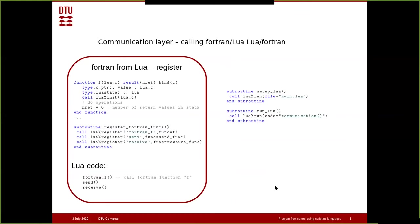Calling Fortran from Lua is straightforward: you basically just need to register a function. That function has to have a single interface — it must accept a C pointer which is your Lua handle, and it needs to return the number of values you put on the Lua stack. You can retrieve and also add arguments from Lua, such as a table or values. Inside the function, you pop the values from the stack. Once you've registered a function, you have the Lua code where you can call the Fortran function — for example, calling 'Fortran_F' or a 'send' function.